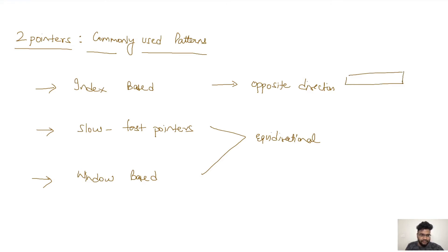So in index based, what we do is basically we are given a linear data structure, so we actually place two different pointers at two different positions and then we move them accordingly. In slow and fast again we have two different pointers.